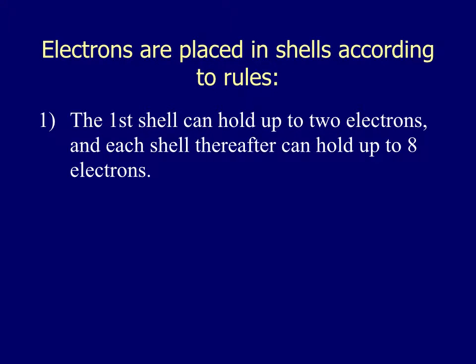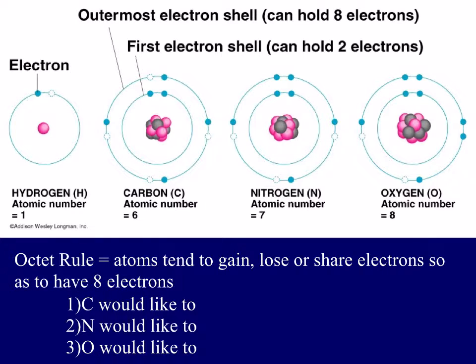The first shell holds two electrons and each shell thereafter can hold up to eight. And then the second rule is the octet rule. So atoms tend to gain, lose, or share electrons so as to have eight electrons. So octet, if you think about a stop sign being an octagon and it has eight sides, oct is the prefix for eight.